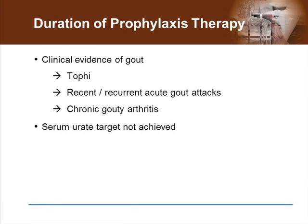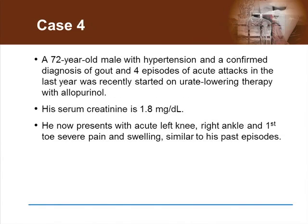Another situation where there is a higher risk of an acute gout attack is during escalation of urate-lowering medication when the serum urate target has not yet been achieved and the dose of allopurinol or other medication still needs to be increased. In our last case, I would like to consider a 72-year-old male with hypertension and a confirmed diagnosis of gout, with four episodes of acute attacks in the last year. He was recently started on urate-lowering therapy with allopurinol. His serum creatinine is 1.8 milligrams per deciliter, and he now presents with acute left knee, right ankle, and first toe severe pain and swelling, similar to his past episodes.